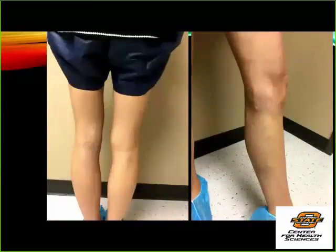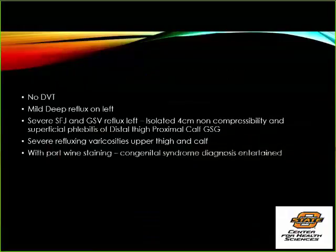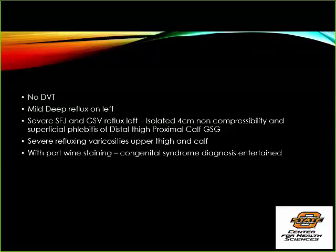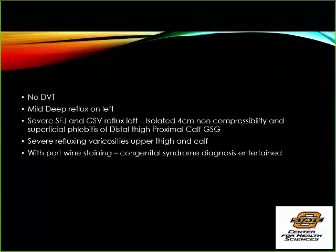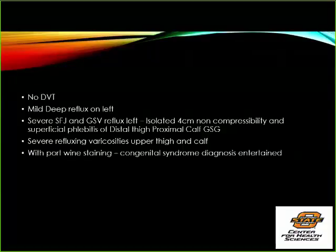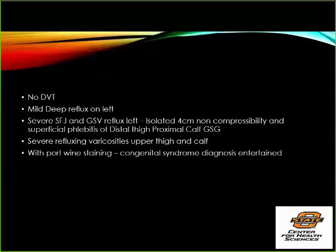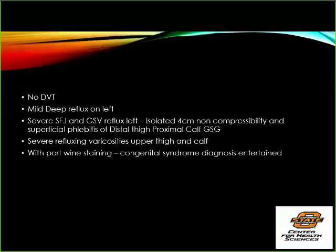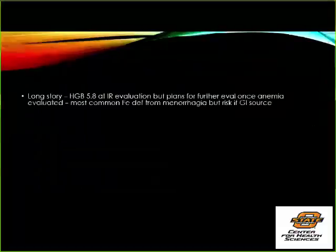On examination you can see hyperpigmented and hypopigmented areas along the thigh and varicosities only on one leg — a bit asymmetric, maybe more enlarged in the calf. Ultrasound in the office — I'm certified in venous sonography — showed no DVT, mild deep reflux on the left, severe saphenofemoral junction and GSV reflux, and isolated four-centimeter non-compressible superficial phlebitis. So she had thrombophlebitis of the great saphenous vein with severe reflux and varicosities of the upper thigh and calf.